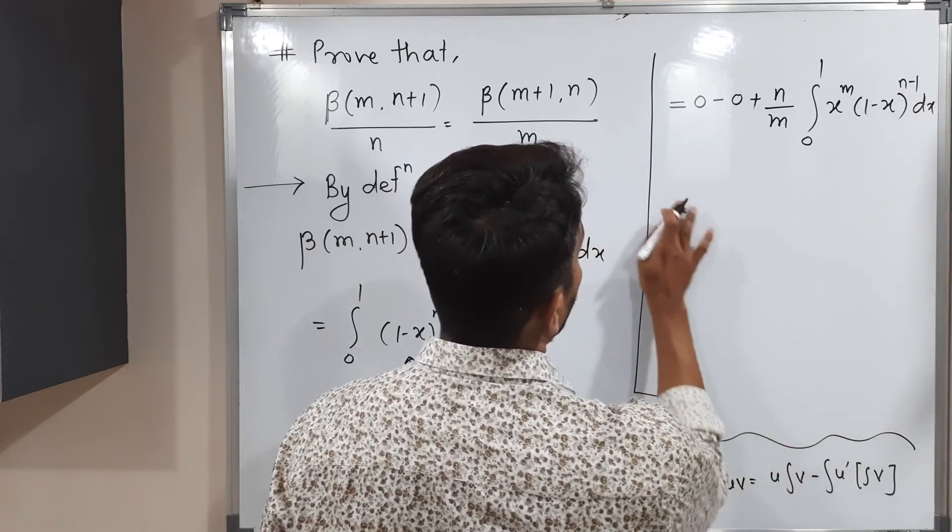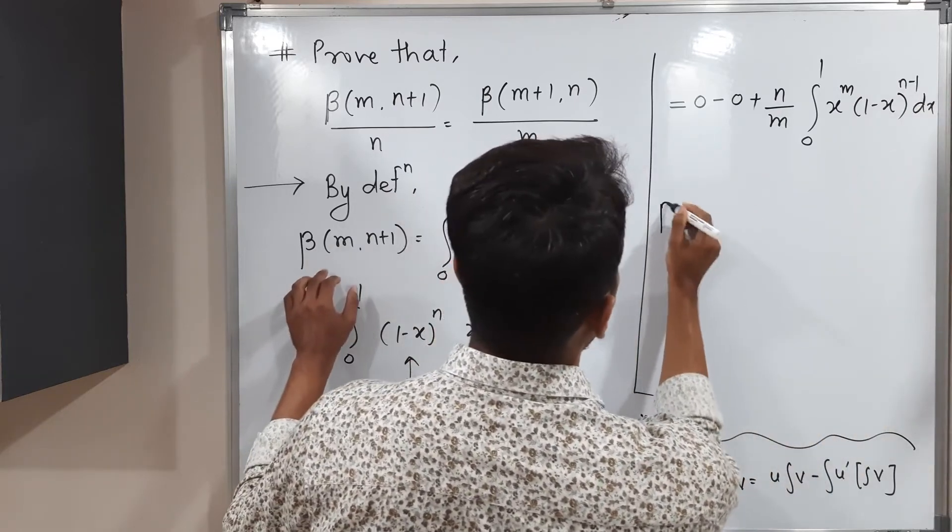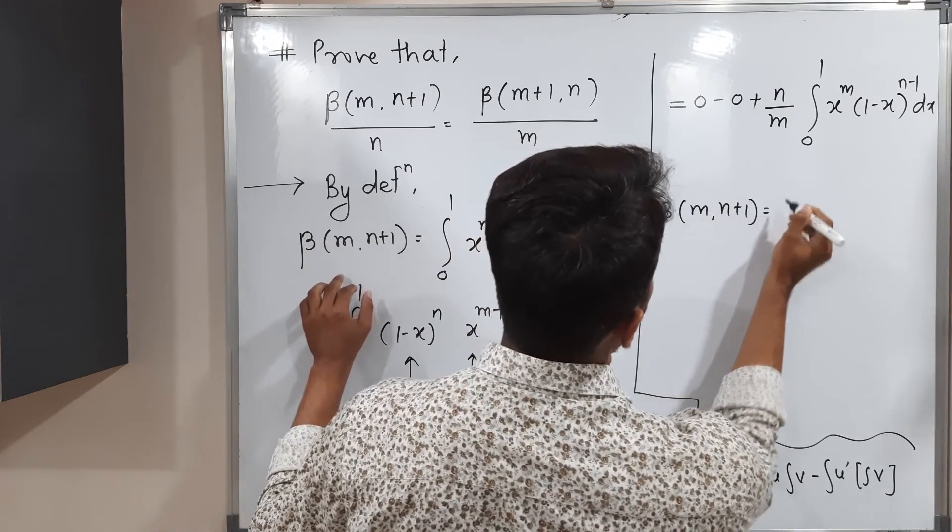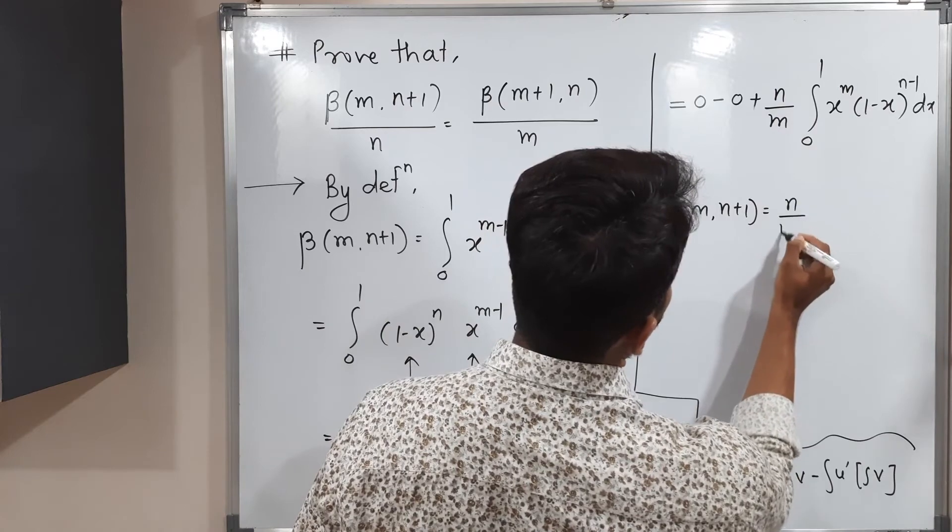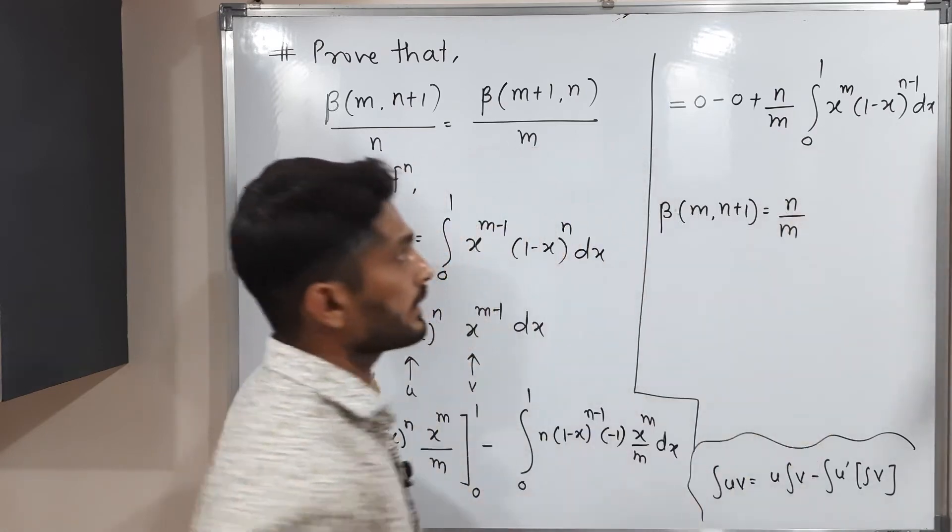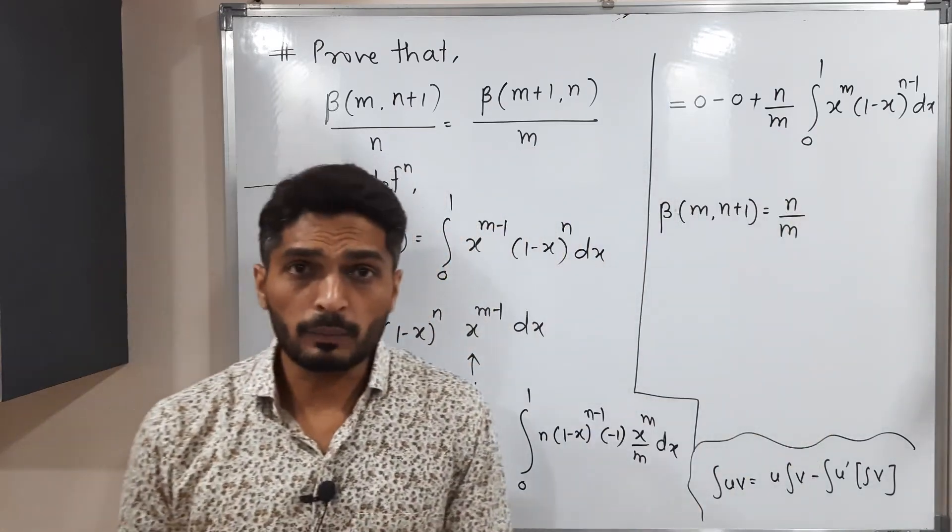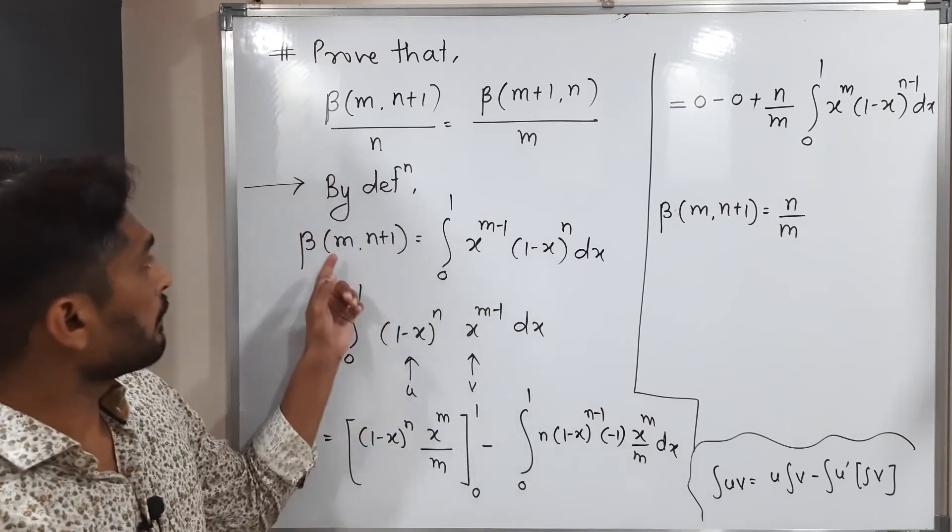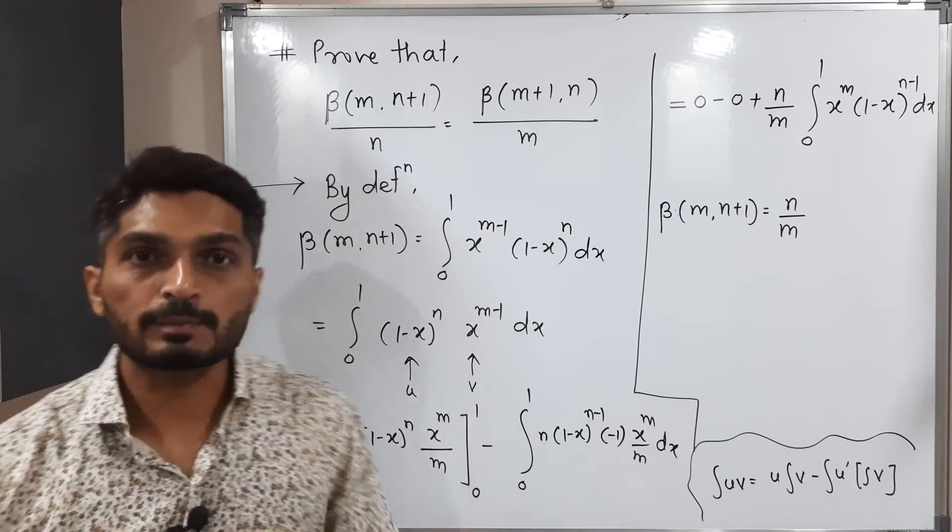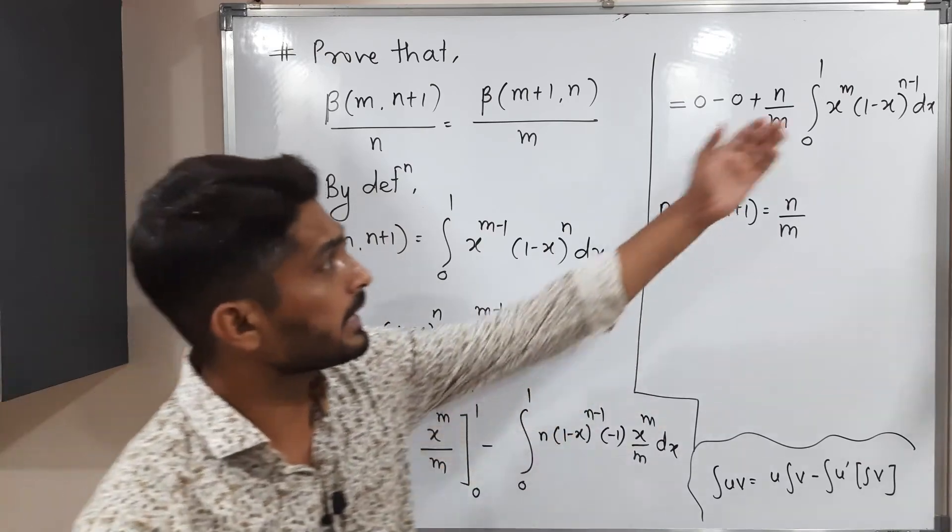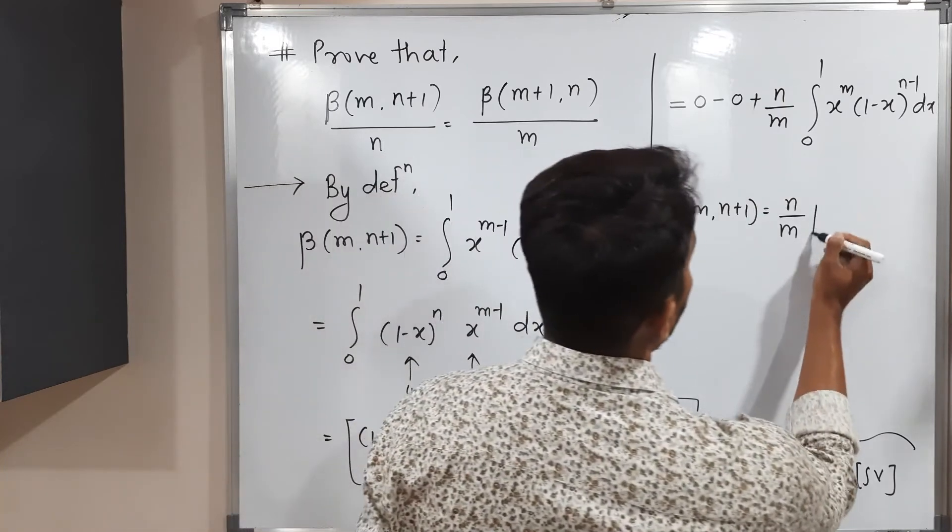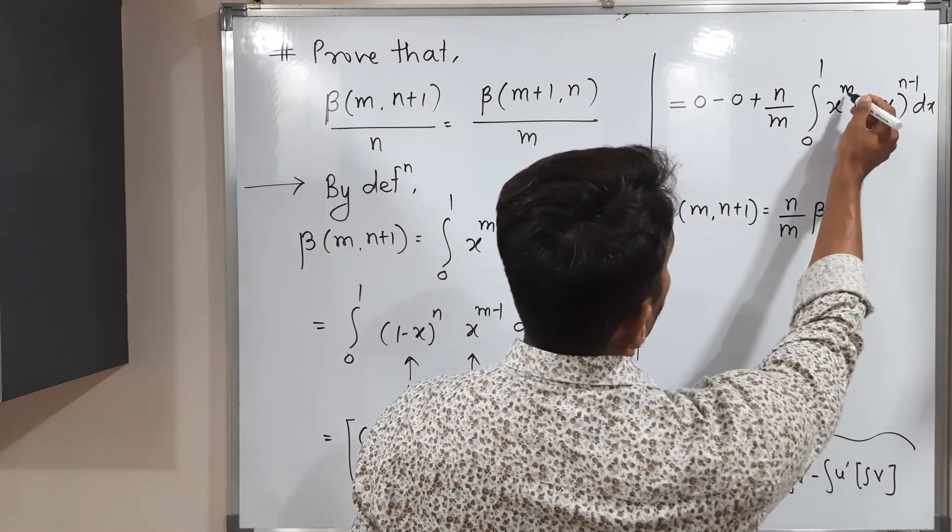So this is equal to, let me write it properly. We started with beta of m, n plus 1. We started with this left hand side. And what we have, n by m, we are getting this integration. But again, we can use the definition of beta function here. Right? With the help of beta function, we wrote beta of this as 1 is equal to, be expressed in terms of integration. So we have an integration now. So let us write in terms of beta.